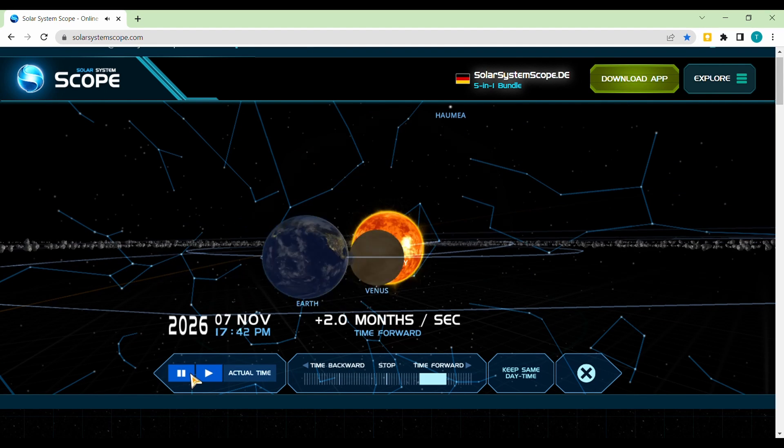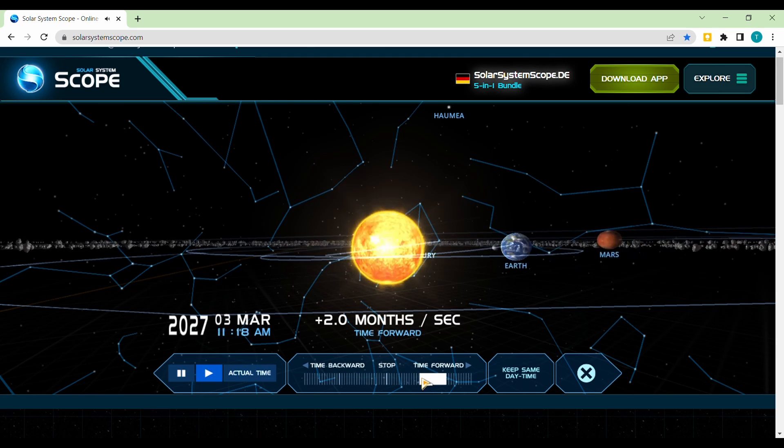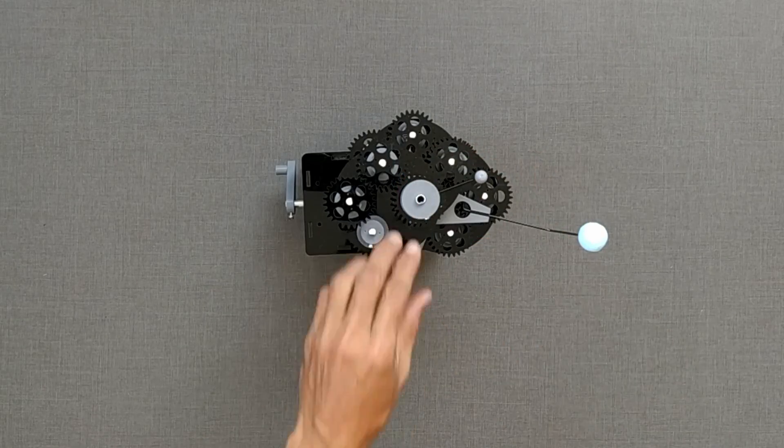Now you know why transit of Mercury does not happen frequently. Let us remove Mercury and place Venus back.